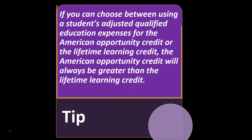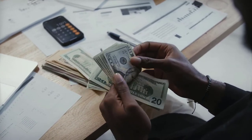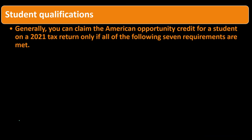Tip: if you can choose between using a student's adjusted qualifying education expenses for the American Opportunity Credit or the Lifetime Learning Credit, the American Opportunity Credit will always be greater than the Lifetime Learning Credit. So the general thought process is to apply expenses to the American Opportunity Credit first, and if you don't qualify, then default to the Lifetime Learning Credit.